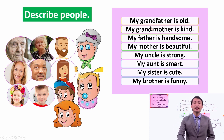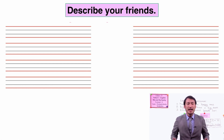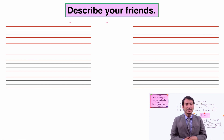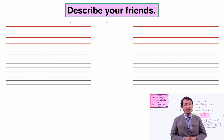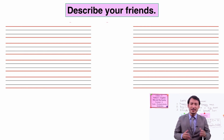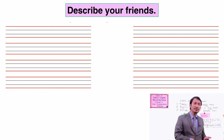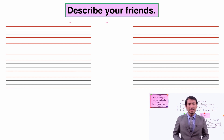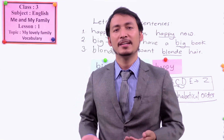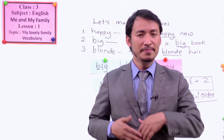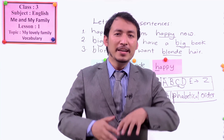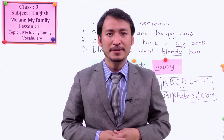Now we have the last exercise — that is your assignment as well. You are going to describe your friends. Now we have described our family, and now can you describe your friends with the describing words we have learned? We have learned opposite describing words, feeling describing words, appearance describing words, personality describing words. You can use those words to describe your friends.